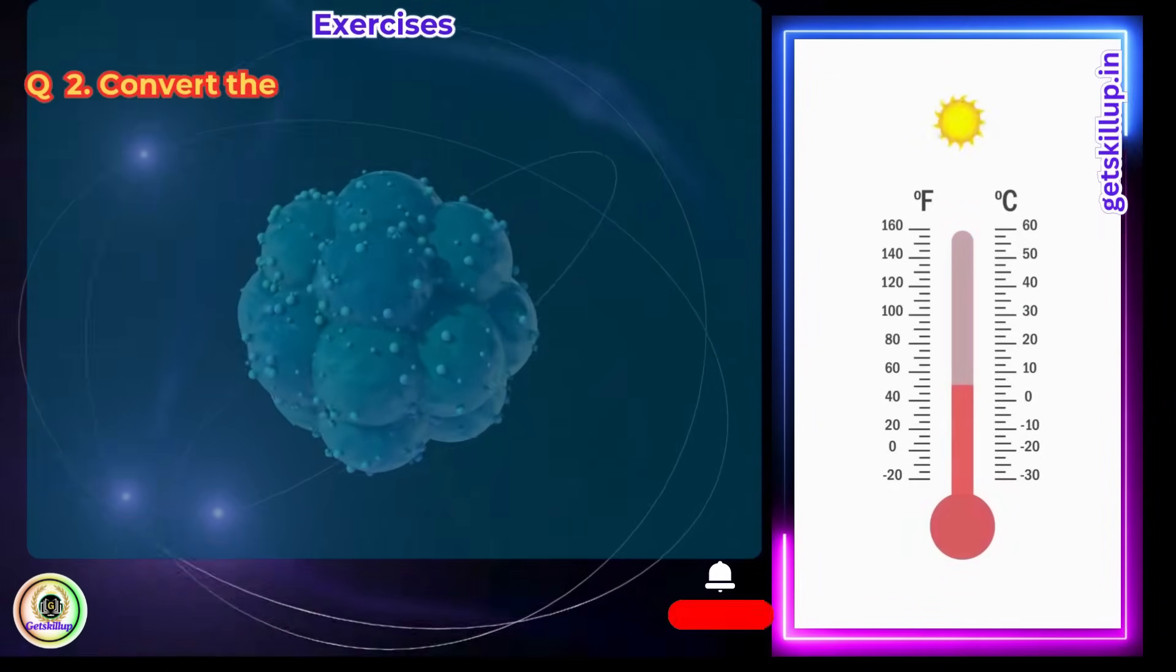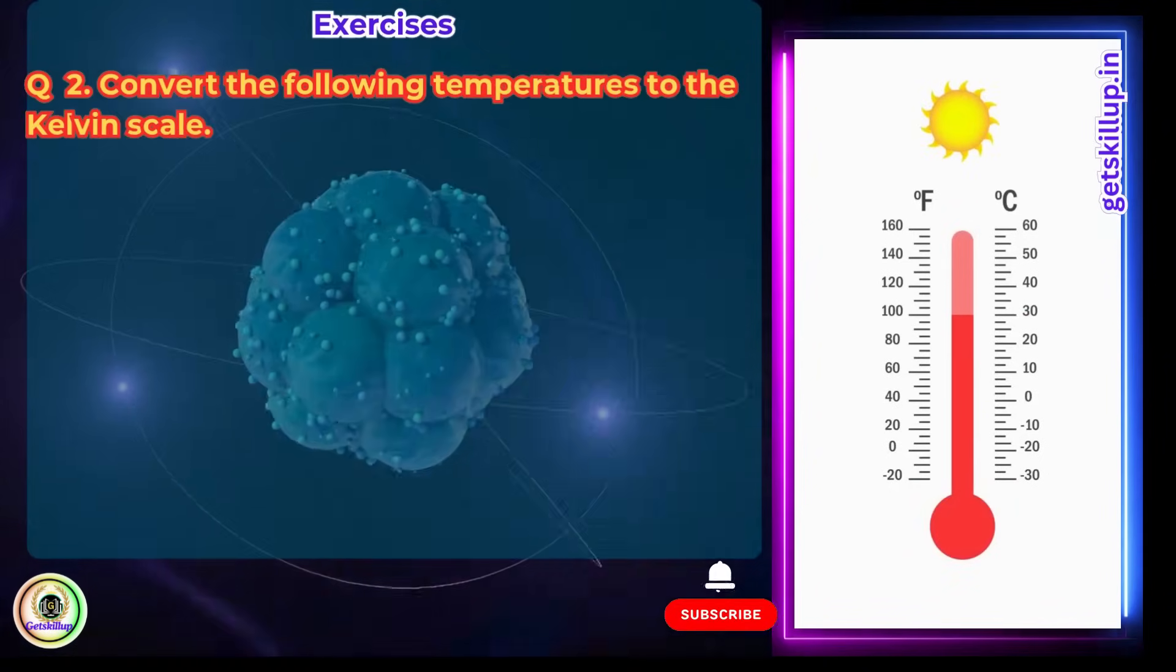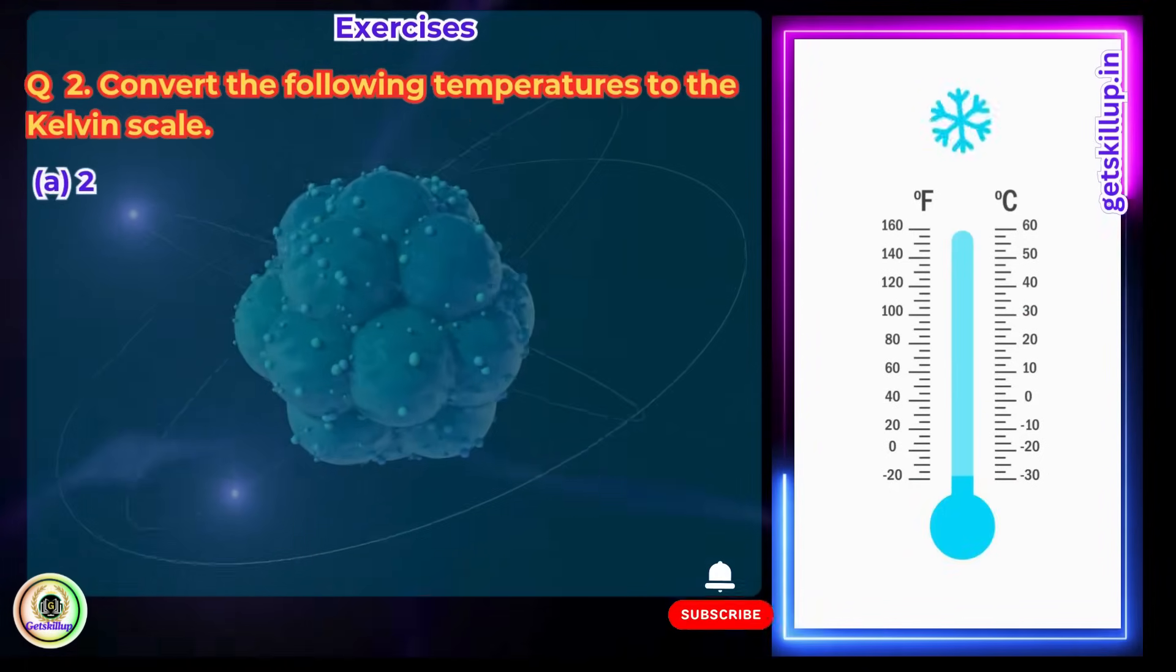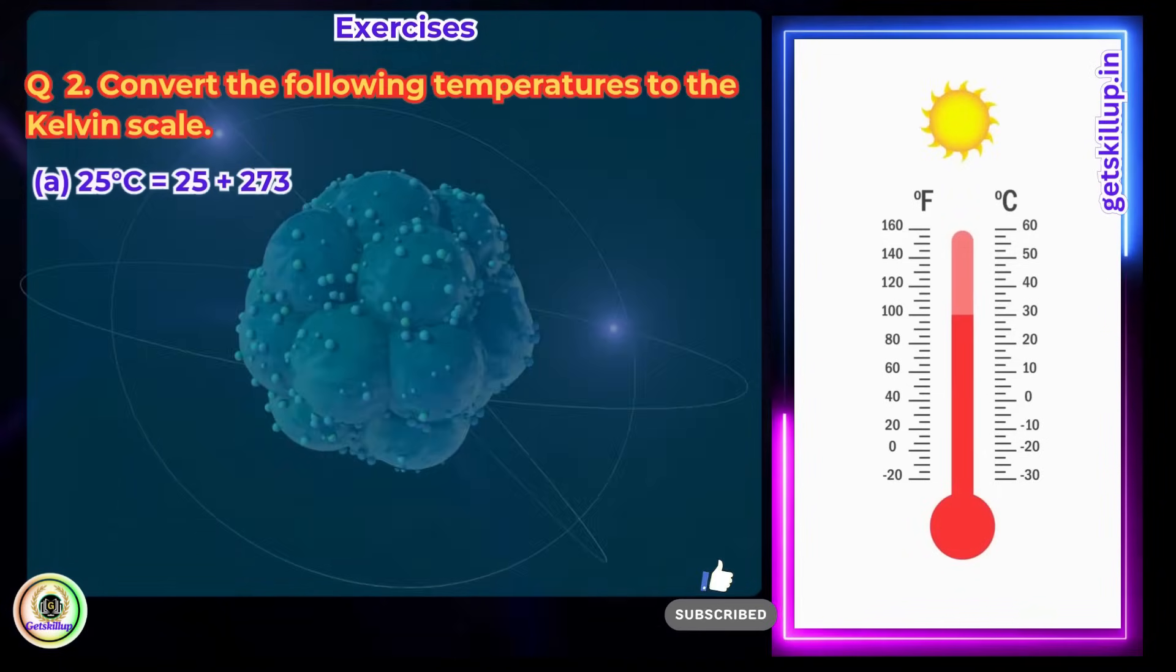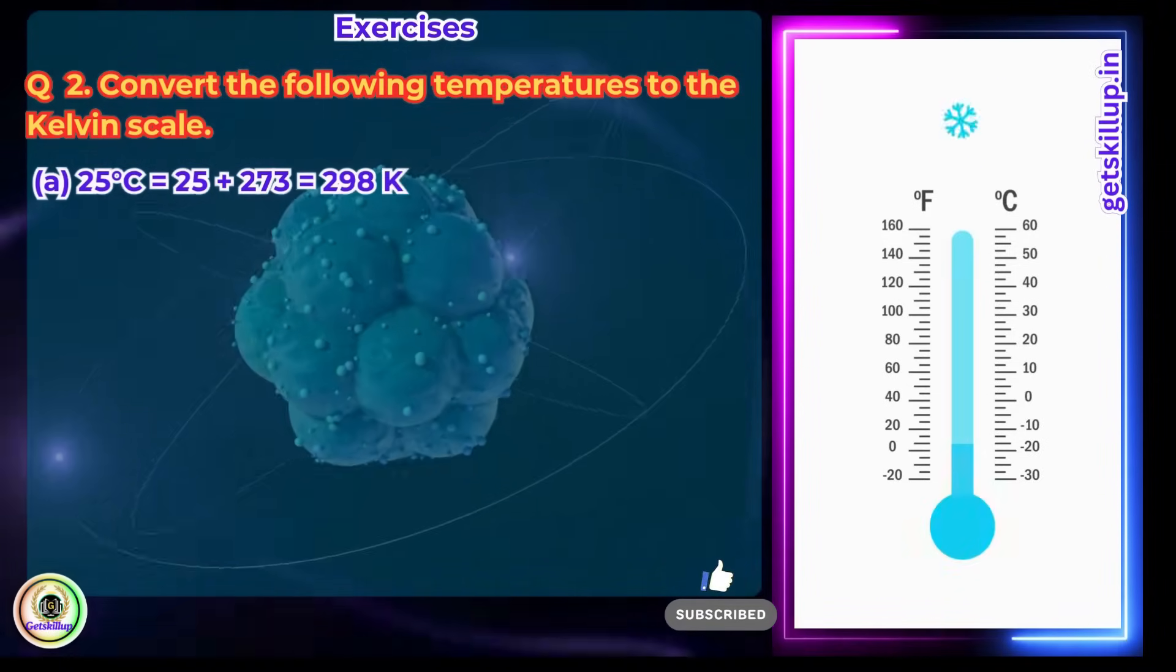Question 2: Convert the following temperature to the Kelvin scale. a. 25 degrees Celsius. Answer: 25 degrees Celsius equals 25 plus 273, which is equal to 298 Kelvin.